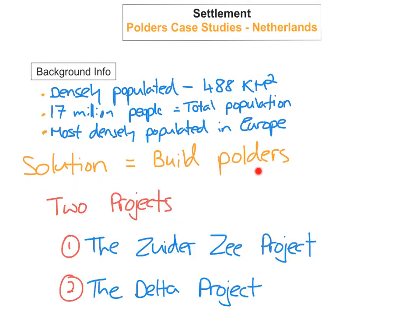The two Polders projects they decided to build were the Zeider Z project and the Delta project. They decided to build a Polder on each one, and I'm going to talk you through each project now.